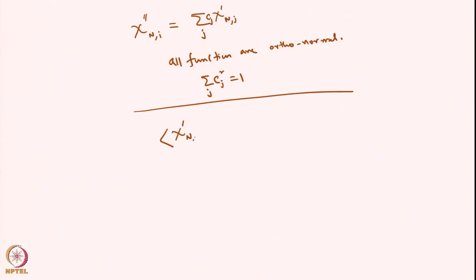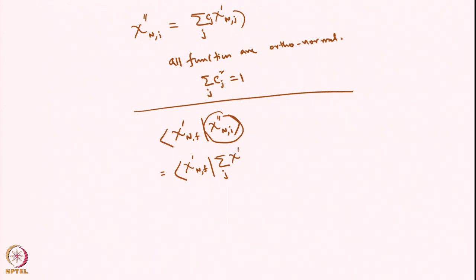Looking at Σ_f ⟨χ'_nf|χ''_ni⟩, I substitute the expansion χ''_ni = Σ_j c_j χ'_nj. This integral becomes Σ_j c_j δ_{fj}. Whenever f and j are not equal, the overlap integral goes to 0; otherwise it survives and gives c_j.